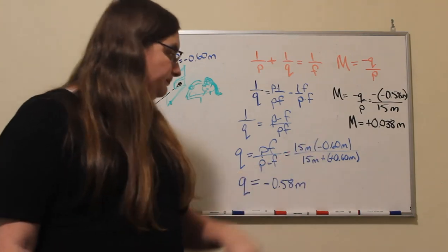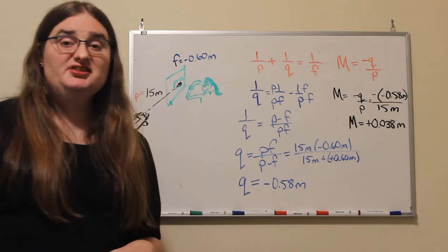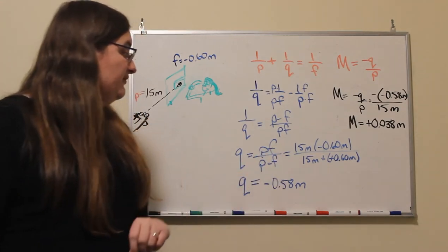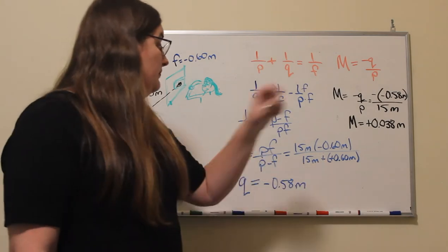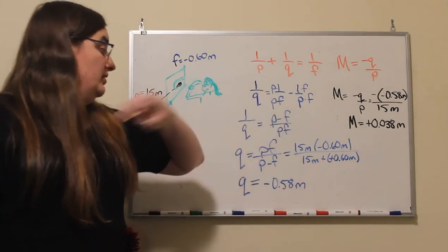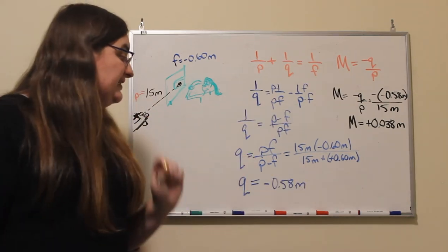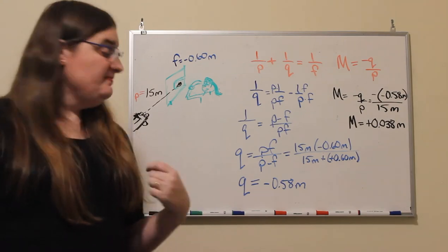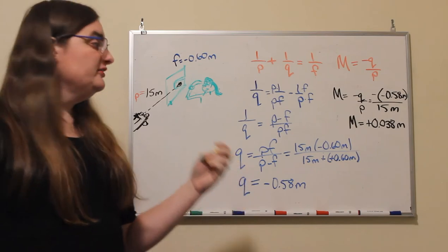So that virtual image, we have 15 meters times negative 0.6 meters divided by 15 meters minus a negative gives me plus 0.6 meters. So if I take 9 meters squared divided by 15.6 meters, I get negative 0.58 meters for the location of my image.